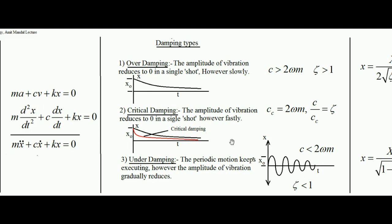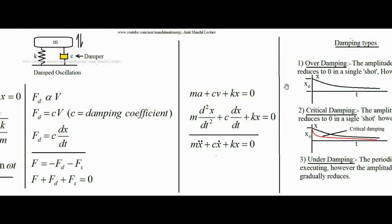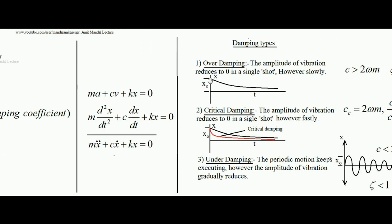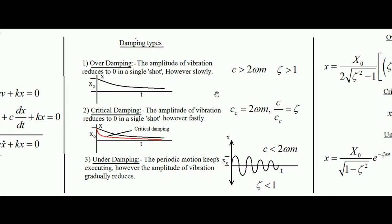For the case of over damping, when c is greater than 2ωm, if the particle starts from amplitude — the maximum displacement from the mean position — slowly the entire amplitude will be killed with respect to time. The displacement moves toward the mean position, and ultimately after infinite time the vibration will stop. Over damping is not a periodic motion; the particle simply comes to rest with no vibration at all.